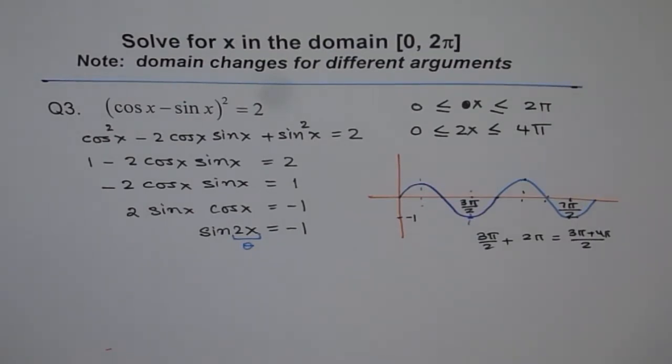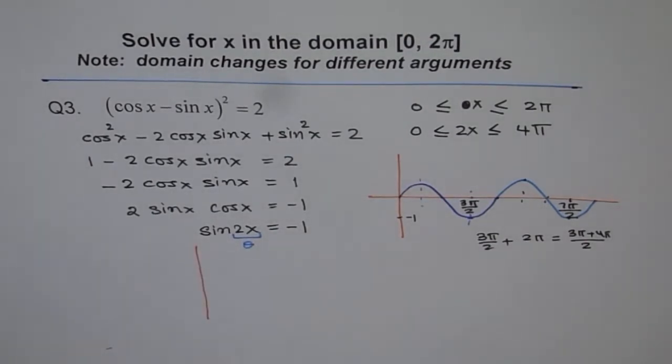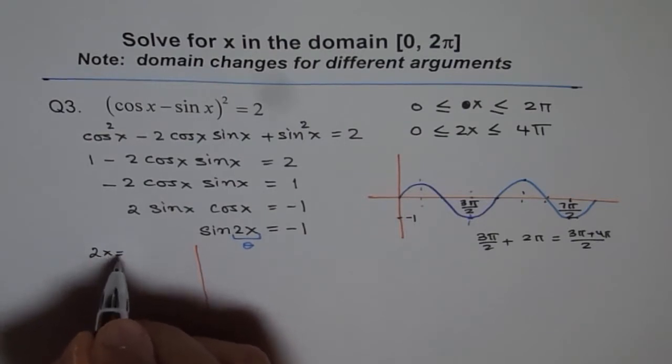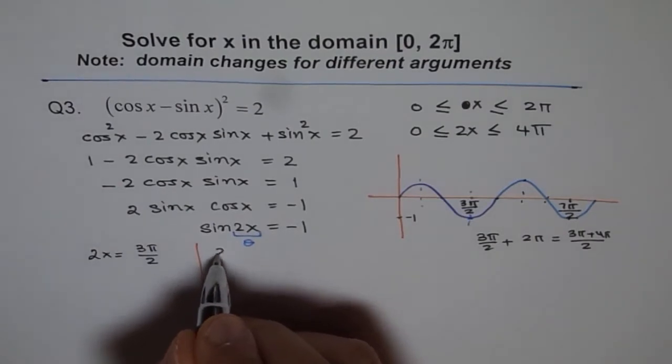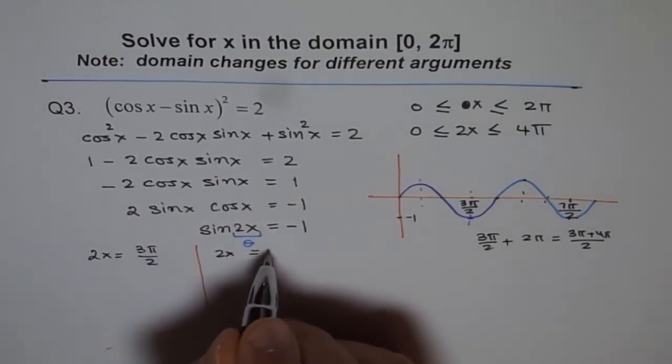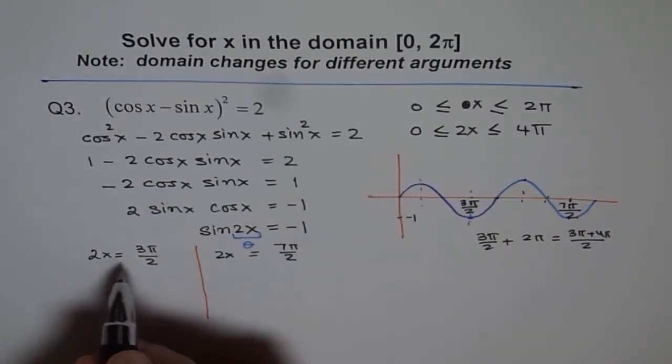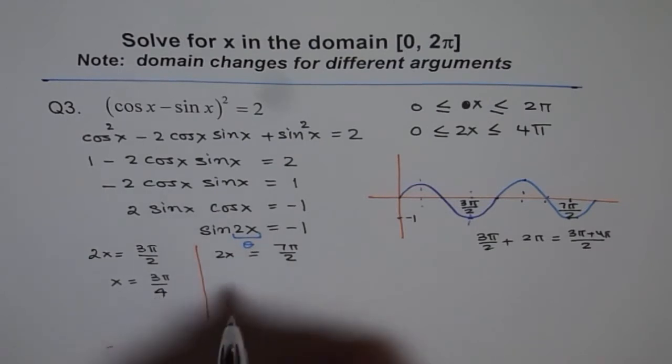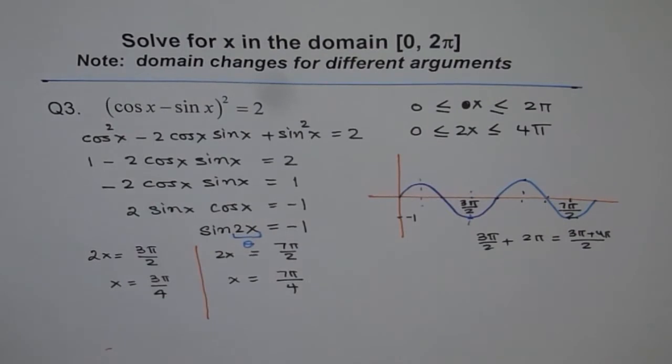That is what I am talking about, and that is kind of most important when you are considering the domain. So we get 2 solutions here. 2x could be equal to 3π/2 or 2x could be equal to 7π/2. Now if 2x is 3π/2, then x is 3π/4 and here x is 7π/4.